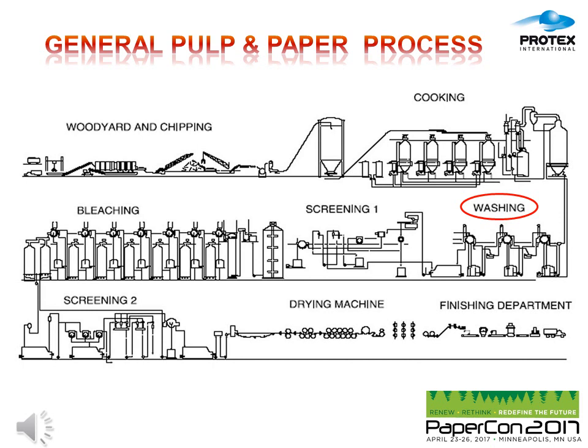In this slide, a typical flow sheet describing a general pulp and paper process is proposed. You can see that the washing step is just after cooking and just before screening and bleaching. The washing step is a very important one to obtain a pulp with good quality.